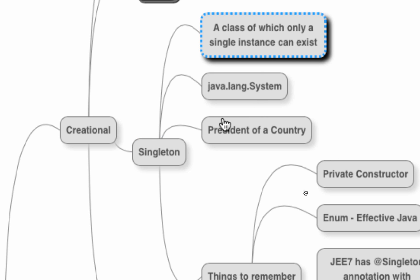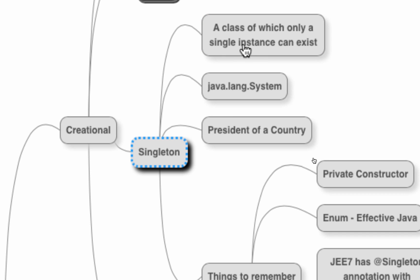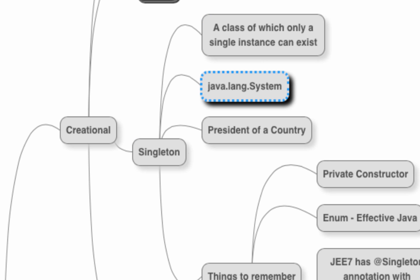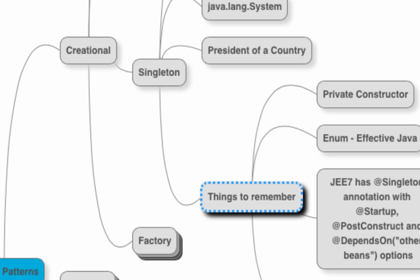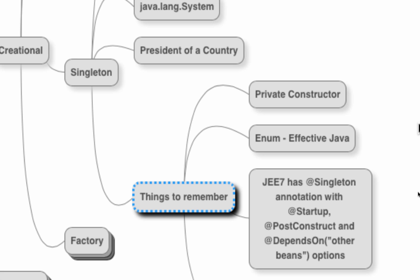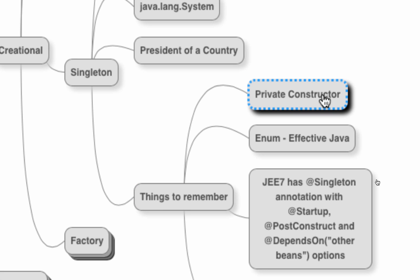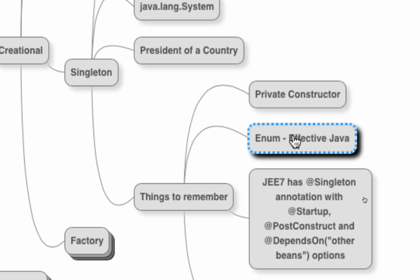One thing to be careful about: when you have multiple JVMs running the same program you will have one instance per JVM, so a singleton can still have multiple instances across different JVMs. There are also things to be concerned about when implementing a singleton — you should definitely make the constructor private. If you want to know how to implement a good singleton, you can look up Effective Java, which has a very good approach using enum.